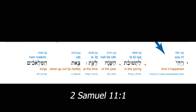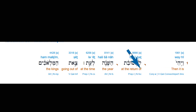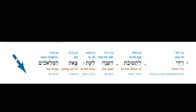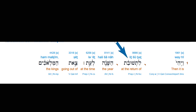This text will establish that the return of the year, or the start of the year, is in the spring — at the spring equinox, when the sun is at the cardinal point, the limit or end of heaven, on the east-west line. After correcting the translation: 'Then it is at the return of the year, at the time of going out of the kings' — namely, going out to war, which is evident from the context. Li-shuvat ha-shanah — the year returns in the spring, at the time that kings go out. This is showing that the year begins in the spring, at the return of the year. That's when the new year returns and the old year goes out.